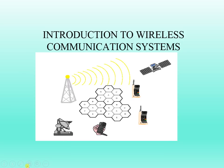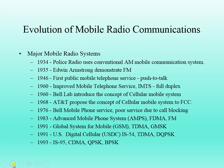Now we'll go to the next slide showing how the evolution of mobile radio communication took place. It all started in 1934 when police radio used a conventional AM mobile communication system. In 1935, Edwin Armstrong demonstrated frequency modulation. As the years increased there was an improvement in wireless communication.